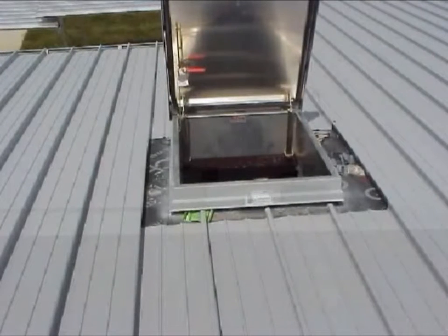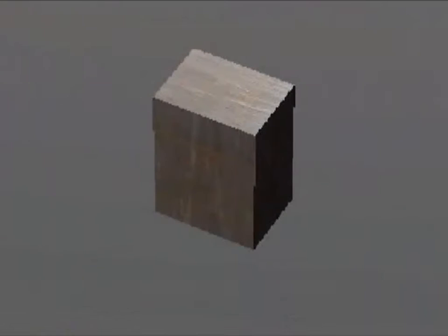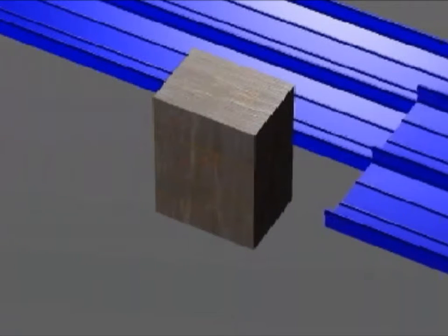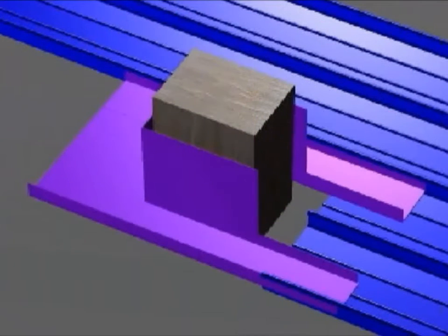Curbs are required as a means for diverting water around large penetrations. Chimneys, ventilator openings, skylights, or roof hatches typically require curbs.